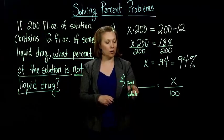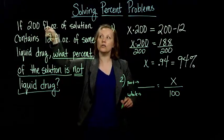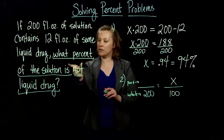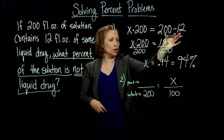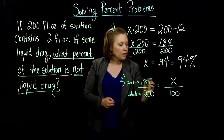And then we need the part and the whole. Well, the whole solution is 200 fluid ounces. And the part of the solution that is not liquid drug, we already did that, 200 minus 12, which gives us the 188.